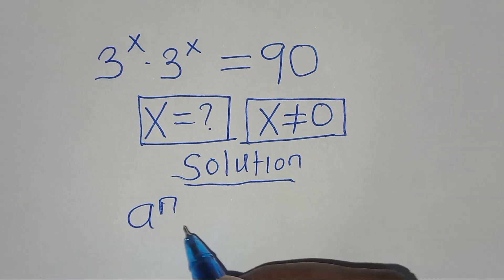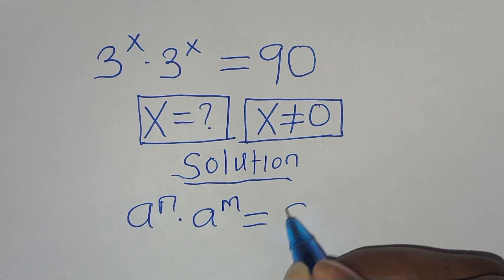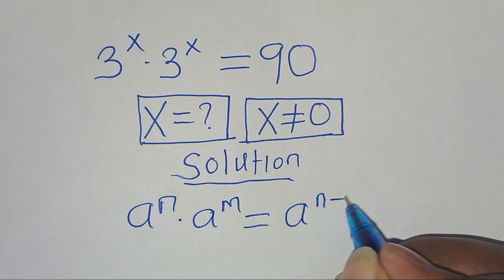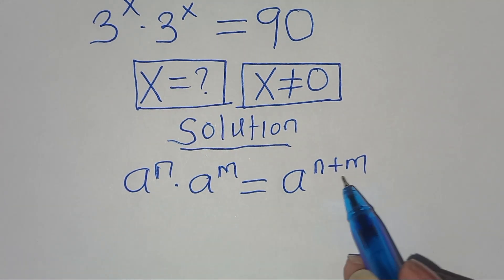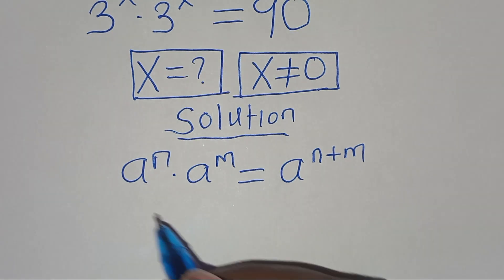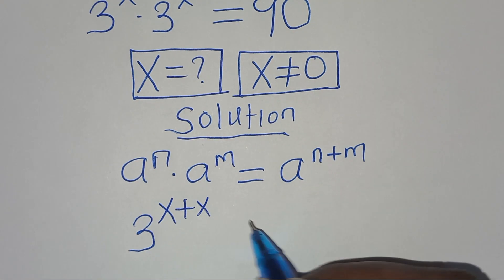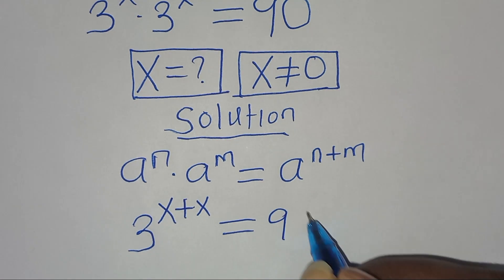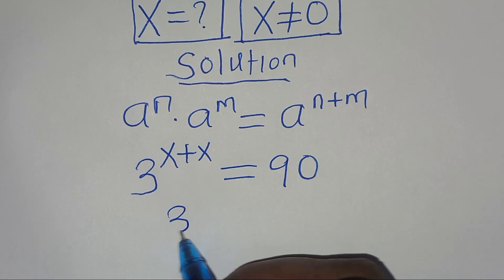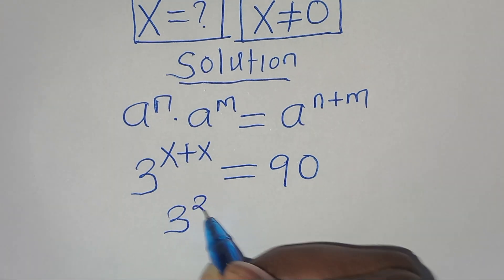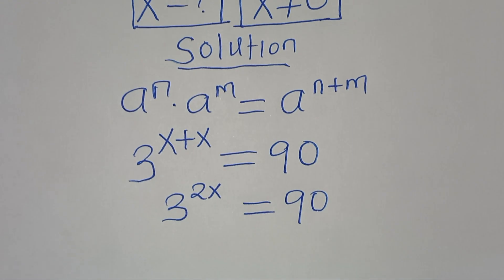We can express a^n × a^m as a to the power of n plus m. Applying this exponent property, we have 3 to the power of x plus x, which is equal to 90. So this implies we have 3 to the power of 2x equals 90.